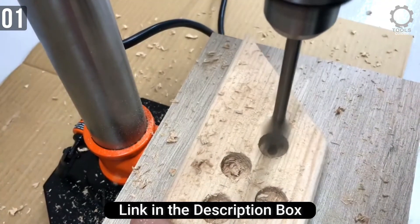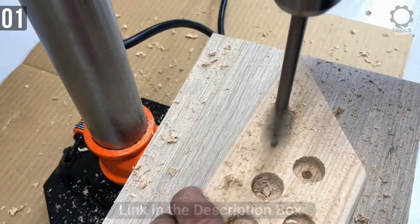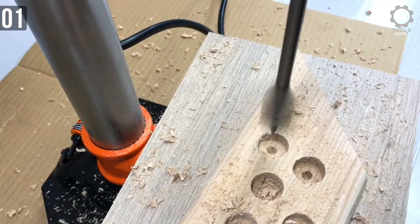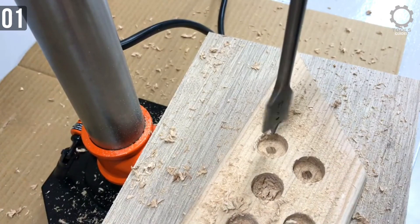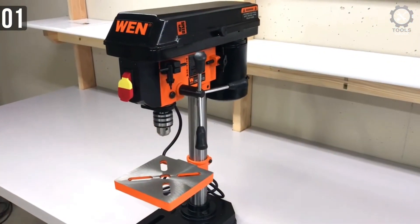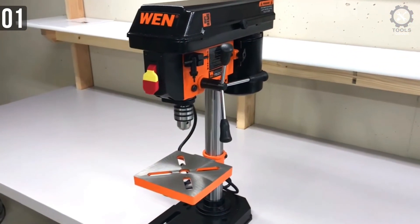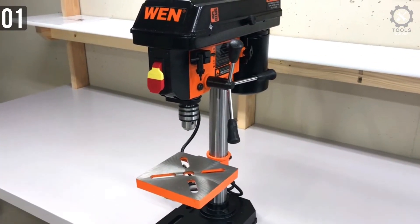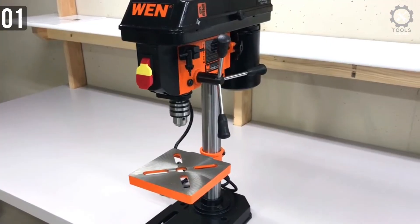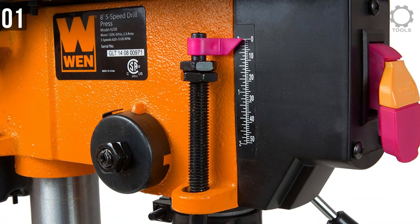This budget drill press is the most affordable model that WEN has to offer, but there is no compromise on quality on the part of this manufacturer. Primarily suited for woodworking, this drill press is going to make drilling into wood or low density metal an easy job. The five speed function allows you to easily adapt to the material, and the operation is very user friendly.